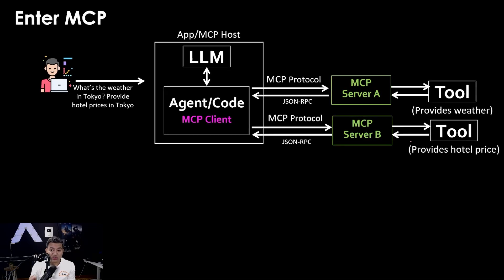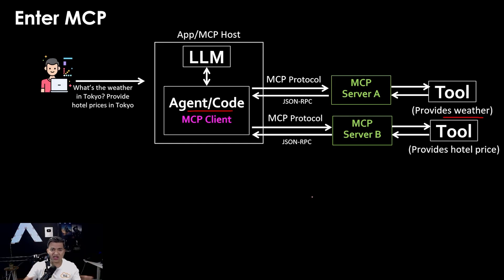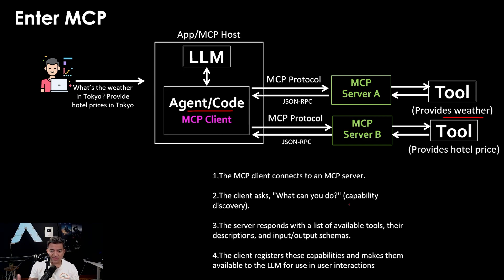MCP solves this problem. It standardizes the communication between the agent or code and the tool. This is implemented using a traditional client-server model. The MCP client is a standard piece of code you can reuse for any MCP server. This MCP client connects to the MCP server, and the client asks: what can you do?